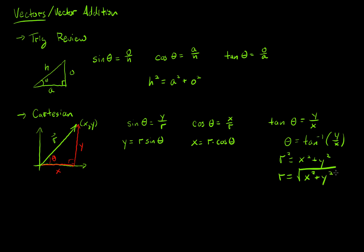These relationships are on your equation sheet and are the ones we'll use repeatedly. One warning: you have to be careful about whether to use sine or cosine, because that depends on where the angle is. In general, whichever side is next to the angle uses cosine — that's how you keep it straight.